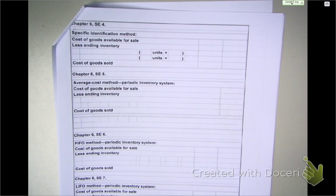SE-4. We're going to assume the data with regard to the inventory of Casciato Company. Starting on August 1st, they have an inventory balance of 40 units at $10 per unit.